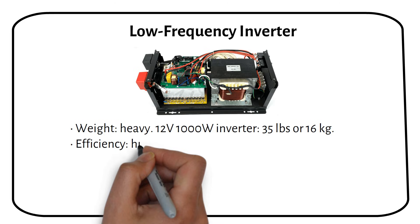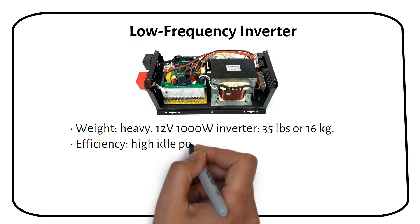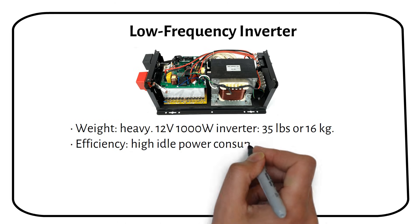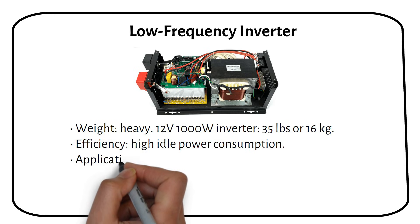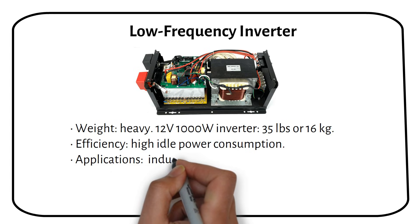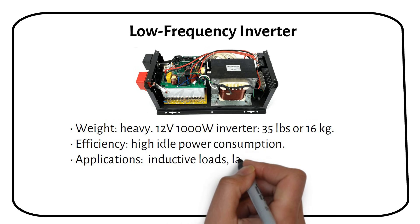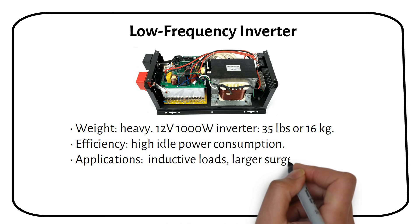They generally have a higher idle power consumption, with Victron being an exception, which I will talk about later. They are better suited for systems expecting inductive loads, such as air conditioning, electric motors and compressors for fridges.